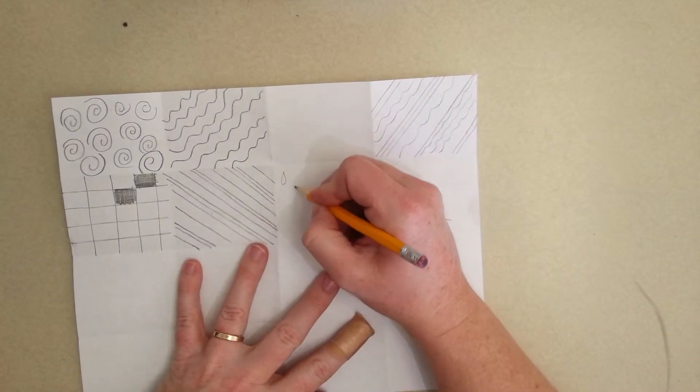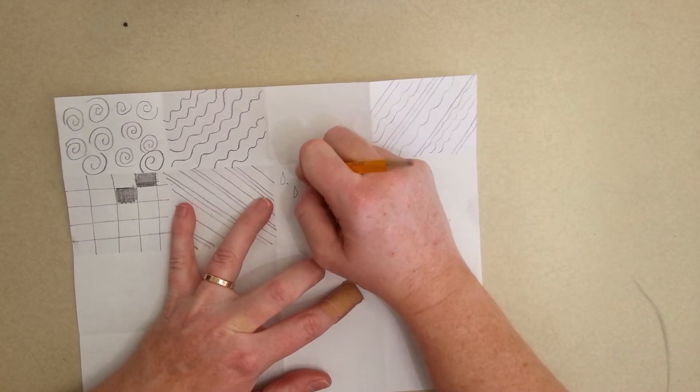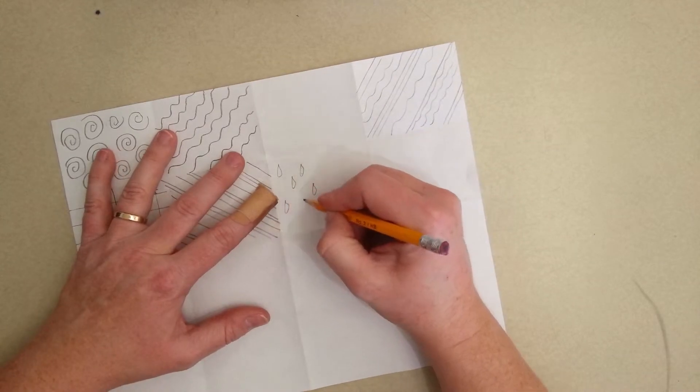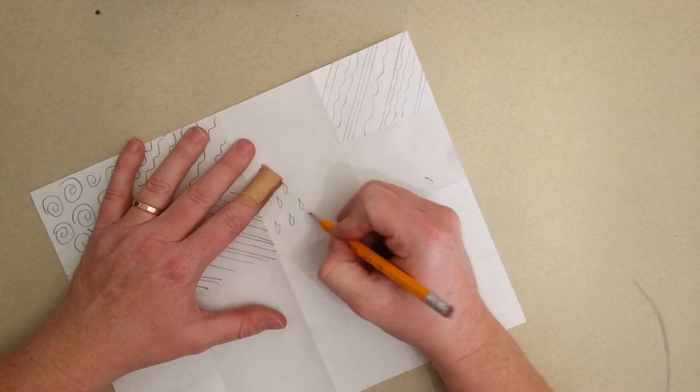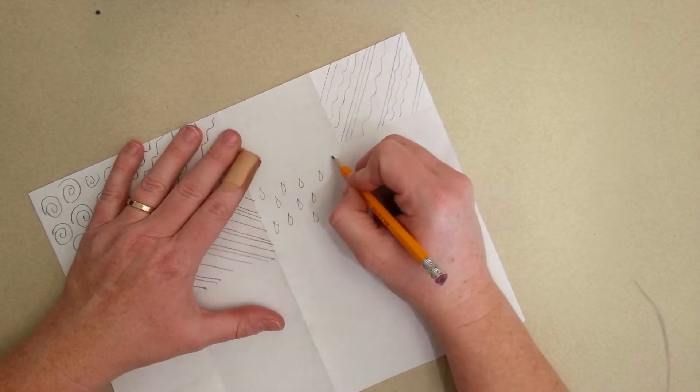This one I'm going to do teardrops or raindrops. When you're doing repetitive lines like this, it's very important to always be paying attention to what your pencil's doing. Don't get sloppy, and if you do, fix it.